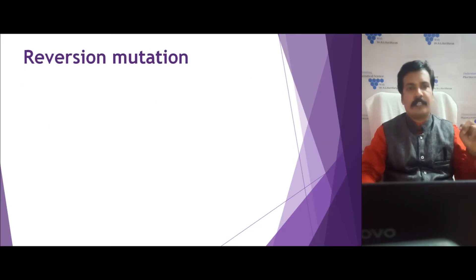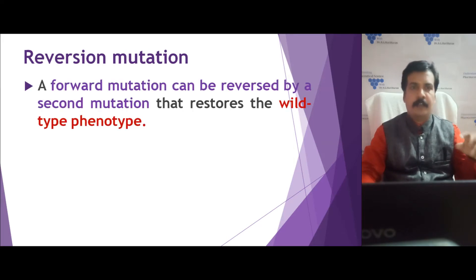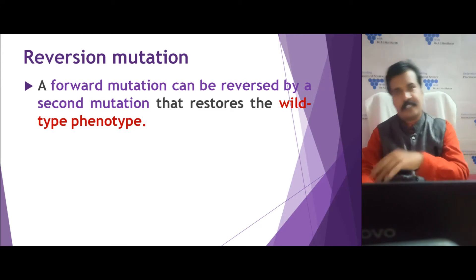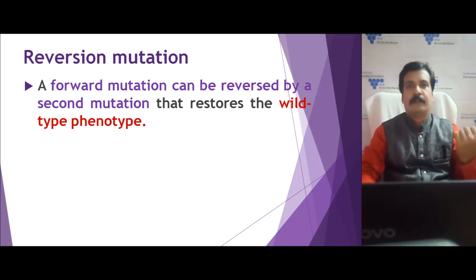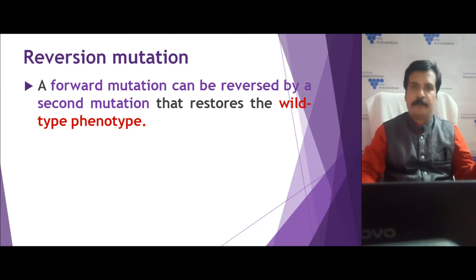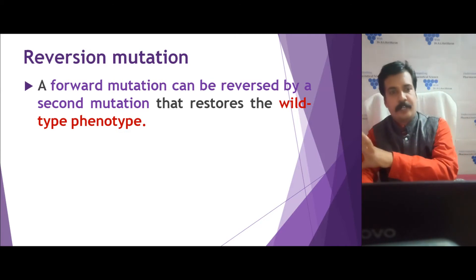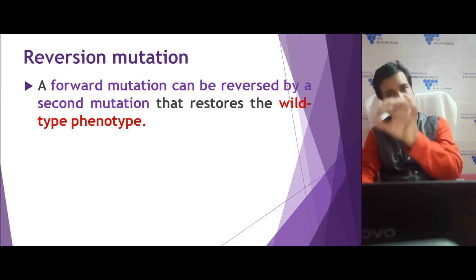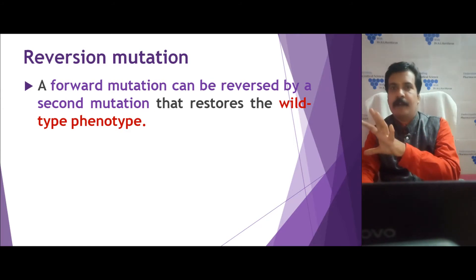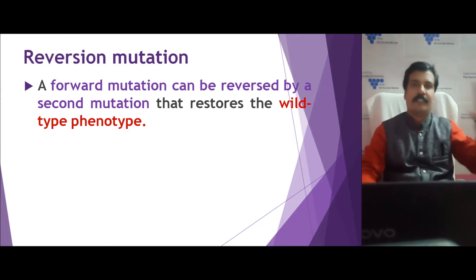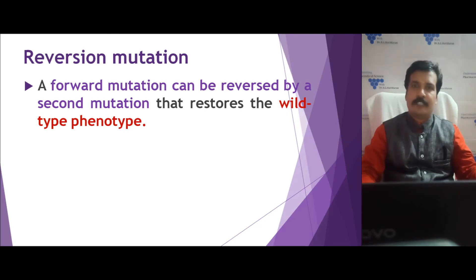The second type is called reversion mutation. Reversion mutation is when the forward mutation is reversed back to the wild type. That means a forward mutation first occurs in a wild type to produce a mutant type, and then a second mutation occurs at the same location in the mutant type, reversing it back to the wild type.